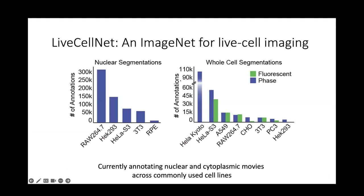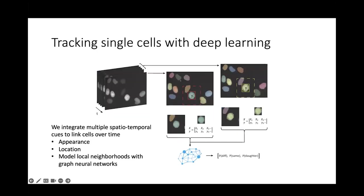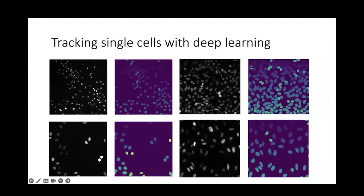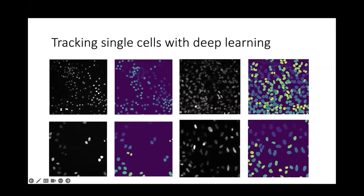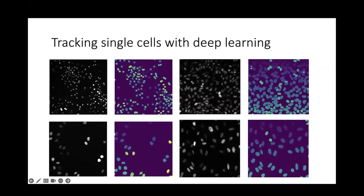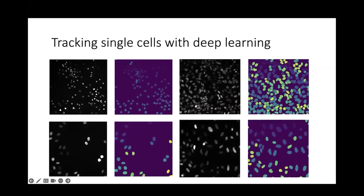We've been hard at work building a similar resource for live cell imaging. Here the major challenge is time — we need to ensure entire movies are labeled rather than just static frames, and that labels are temporally consistent. The size of our labeled data for live cell imaging is quickly approaching the size of TissueNet. Labeling entire movies means we can develop models for cell tracking and lineage construction, in addition to cell segmentation. Our approach treats tracking as a classification problem: given a cell in frame I and another in frame I+1, we determine whether these are the same cell, different cells, or if there's a mother-daughter relationship, using graph neural networks to integrate appearance, location, and neighborhood information.